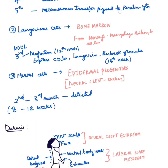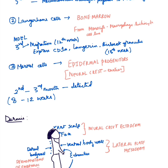Langerhans cells are derived from the bone marrow, from the monocyte-macrophage-histiocyte cell line. They also complete their migration by the 12th week — the third month — like the melanocytes. They express their cell surface markers such as CD1a and langerin, and their Birbeck granules appear by about the 13th week of embryonic life.